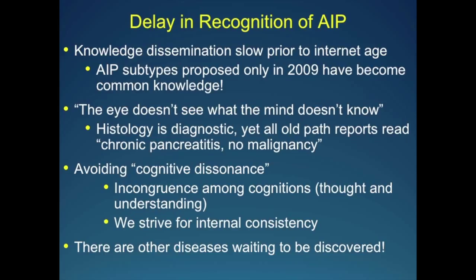There's another problem I found early on: cognitive dissonance — an incongruence among cognitions. When you see something and think of something else and those don't gel, you try to resolve it. When you see a patient with obstructive jaundice, you think it's pancreatic cancer. Any other feature, like retroperitoneal fibrosis, you dismiss. We strive for internal consistency and block out things that don't fit. That led to a lack of recognition for a long time, and makes me believe we are suppressing many such signals — and there are many other diseases waiting to be discovered.